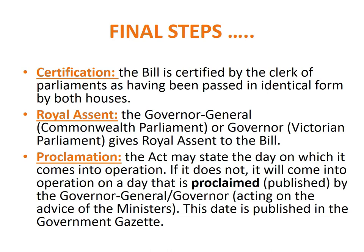Once a bill has received royal assent, we refer to it as an act. The final stage is proclamation. If the act itself states the day on which it comes into operation, then it will come into operation as a law on that day. However, if the act does not state the date, then it will come into operation on the day proclaimed — that is published — by the Governor-General acting on the advice of the Commonwealth government for Commonwealth acts, or the Victorian Governor acting on the advice of the Victorian government for Victorian acts. The proclamation date is published in a publication called the Government Gazette.